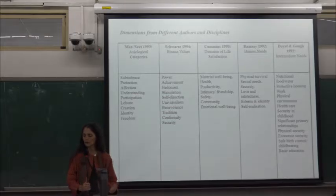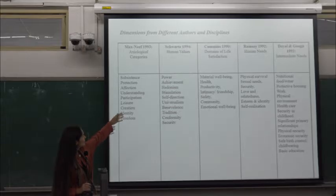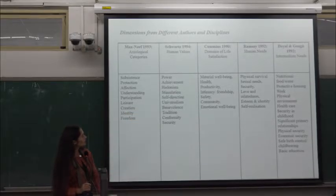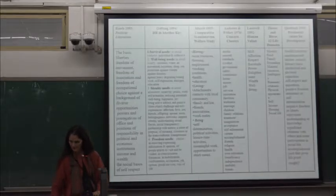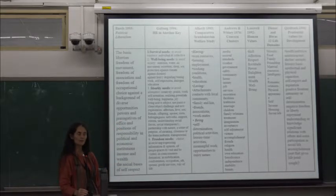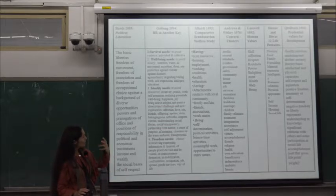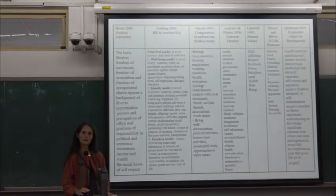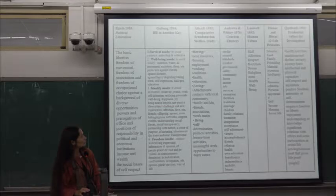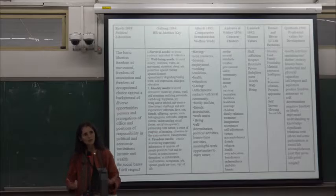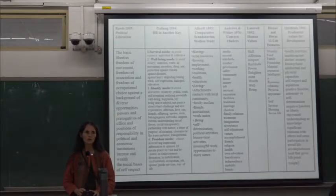Other lists of dimensions include work by the Chilean philosopher Manfred Max-Neef, cross-cultural psychologist Schwartz on universal human values, Robert Cummins on life satisfaction domains, Maureen Ramsey on human needs, Doyle and Gough on basic needs, John Rawls in political liberalism, Johan Galtung on human rights, Allardt's Scandinavian social welfare study on having, loving, and being, Andrews and Withey on social indicators, Lasswell on jurisprudence, Diener and Biswas on subjective well-being, and Muzaffar Kizilbash synthesizing philosophical approaches. There are many resources to draw on.